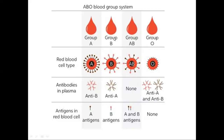A patient having blood group A must carry the A antigen in his RBCs, while anti-B antibodies are present in his plasma but anti-A antibodies are absent. A patient having blood group B must have the B antigen in his blood, while anti-A antibodies are present in the plasma but anti-B antibodies must be absent.